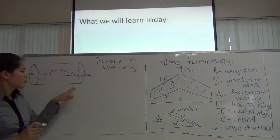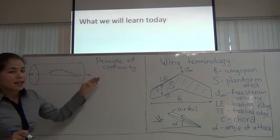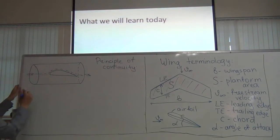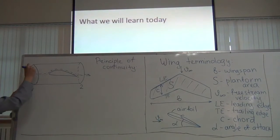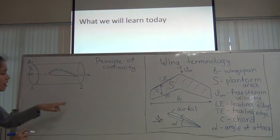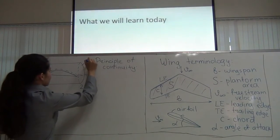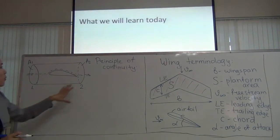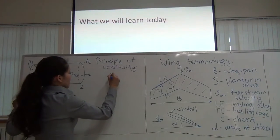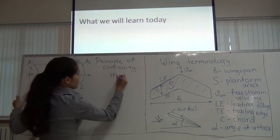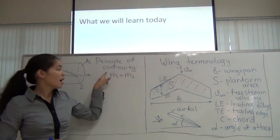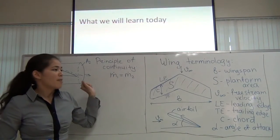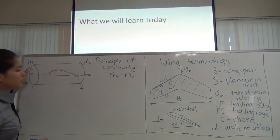This is called the principle of continuity: mass flow in equals mass flow out. Let's introduce numbers — the inlet is labeled 1 and the outlet is labeled 2, with areas A1 and A2 respectively. The principle of continuity tells us that M1-dot equals M2-dot, where the dot means the derivative with respect to time — the mass entering per second equals the mass exiting per second.